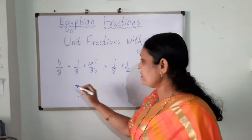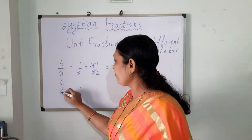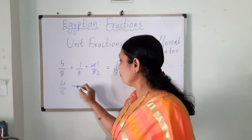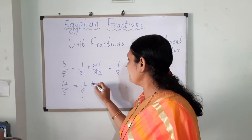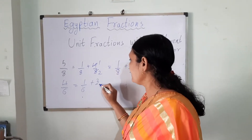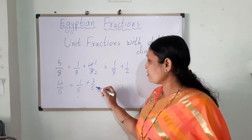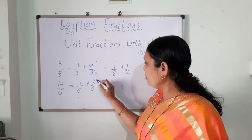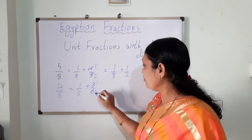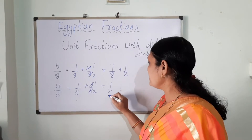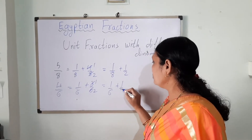Let's take another example: 4 upon 6. I can write 4 upon 6 as 1 upon 6 plus 3 upon 6. Now 3 upon 6 simplifies to 1 upon 2, so 4 upon 6 is written as 1 upon 6 plus 1 upon 2.